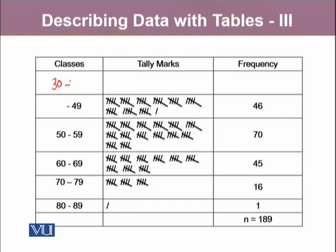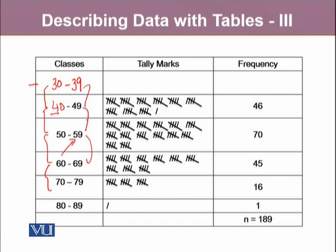We add 10 to 30 to get 40. To construct the upper class limit of the first class, we go one step behind 40, which is 39. So this is our first class: 30–39. We keep adding 10 for each subsequent class, constructing all classes from there. The second step is to look at our ordered array and count values within each class range.